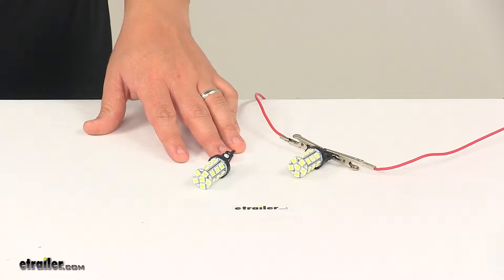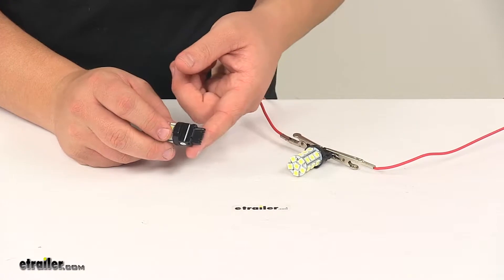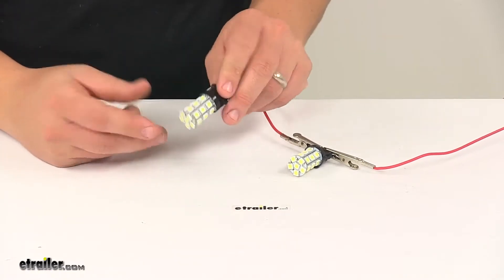These replacement bulbs fit directly into original factory light sockets. The base type is 3156 or T25 base, and it's an LED system.